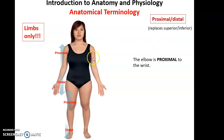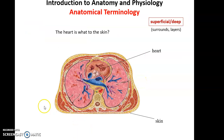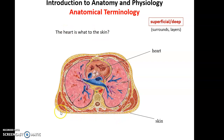When talking about limbs, we can still use anterior, posterior, lateral, and medial — we just replace superior and inferior with proximal and distal. Then we have superficial and deep. Superficial means closer to the surface of the body; deep means further away, usually used for layers of an organ or structure. The heart is deep to the skin — further from the surface — while the skin is as superficial as you can get.